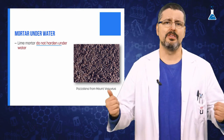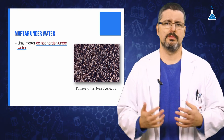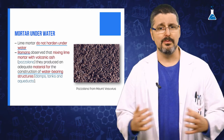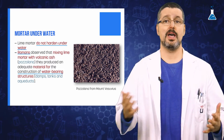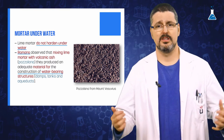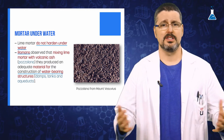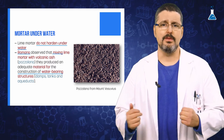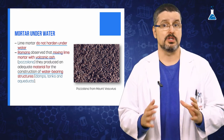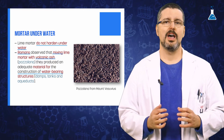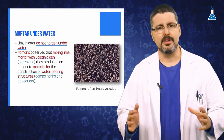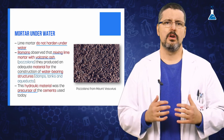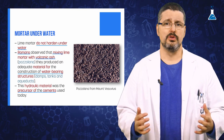However, lime mortar does not harden underwater, so the mixture was improved by Romans for the construction of water-bearing structures such as dams, tanks, and aqueducts — many of which are still standing today. They observed that mixing lime mortar with volcanic ash, pozzolana, produced a hydraulic material that would harden underwater. This material was the precursor of the cement we use nowadays.